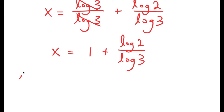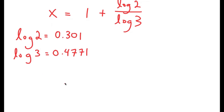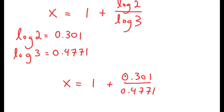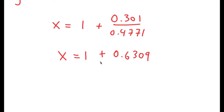Log of 2 is equal to 0.301 and log of 3 is equal to 0.4771. So I get x is equal to 1 plus 0.301 over 0.4771. And 0.301 over 0.4771 is 0.6309, so x is equal to 1 plus 0.6309, which is equal to 1.6309. So this is my solution.